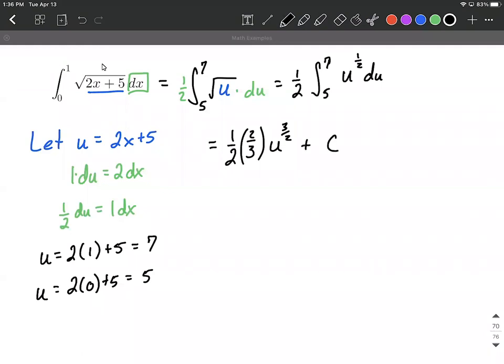We also wanna include, we don't need to include a plus c at the end. What we wanna include in this situation is our evaluating this from five to seven, which works out to be, we can do a little bit of simplifying down with our fractions there, that the twos can cancel out.